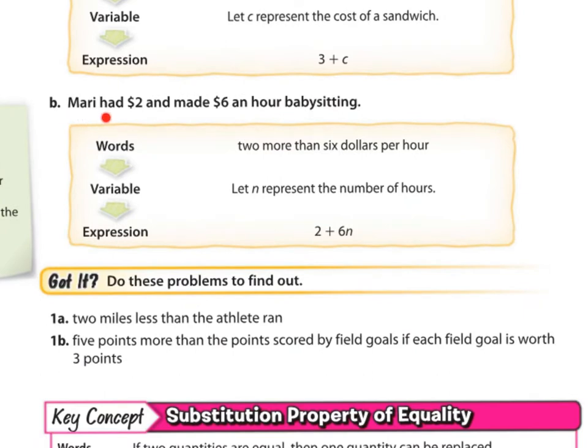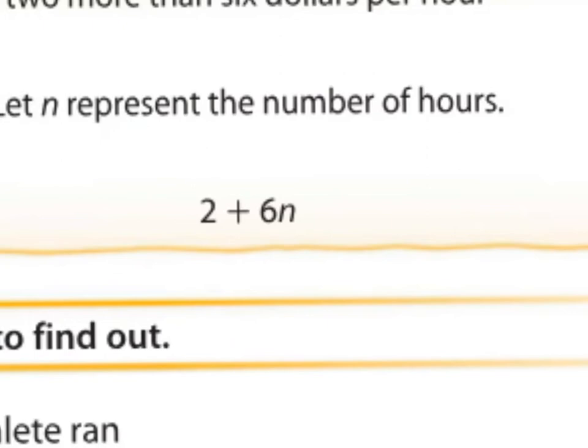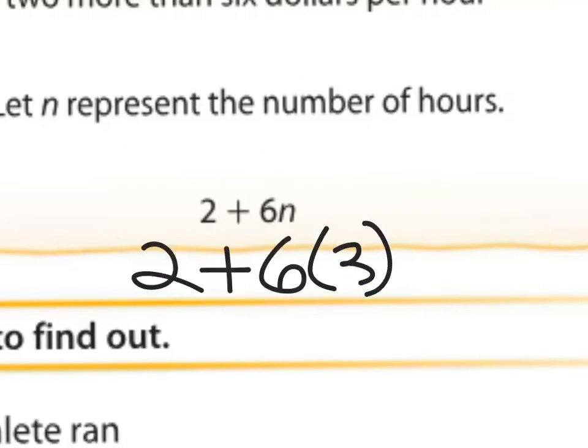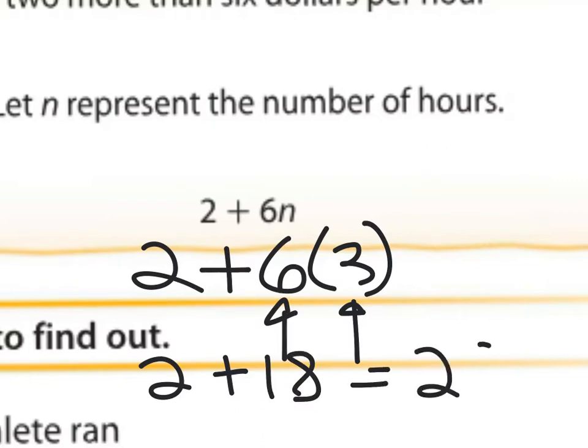Letter B. Mary had $2 and made $6 an hour babysitting. We don't know how many hours she babysat. So for every hour, we know she's going to make $6. So it could be the 6 is going to be multiplied by the number of hours. So here's the words. 2 more than $6 per hour. We know we already have the 2, right? She already had $2. We're going to let N represent the number of hours. And this is what it would look like. She already has the 2 plus the $6 she makes every hour. So the 6 has to be multiplied by the number of hours. Now, let's pretend that she only worked 3 hours. It would look like this. 2 plus 6 times 3. Because each hour, she made $6. And here's each hours. So then 2 plus 18. How much does she have in total? She has $20 now after working 3 hours.